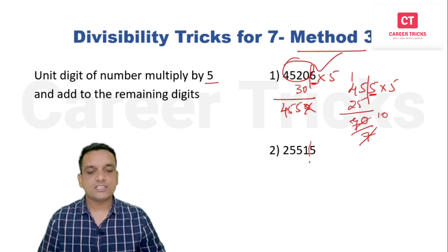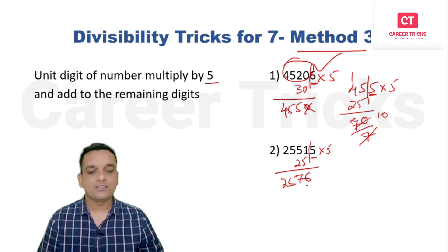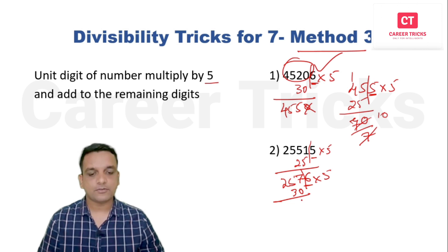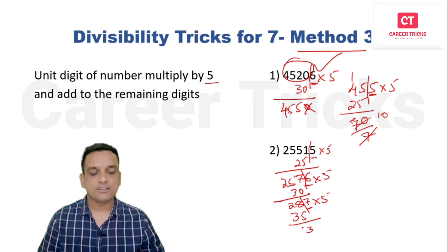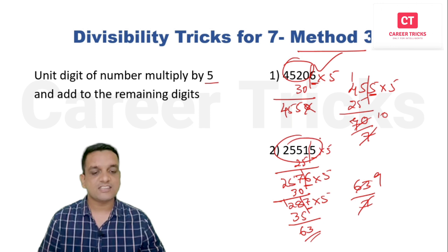Solving the second problem with method three: unit digit is 5 (from 1 7 2 2 5 — wait, from the second example number). Multiply 5 by 5 = 25. Add 25 to remaining 2551: we get 2576. Unit digit 6, multiply by 5 = 30. Add 30 to 257 = 287. Unit digit 7, multiply by 5 = 35. Add 35 to 28 = 63. Since 63 is divisible by seven, this number is also divisible by seven.